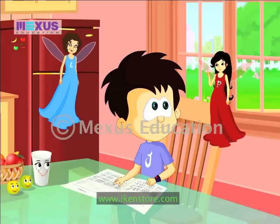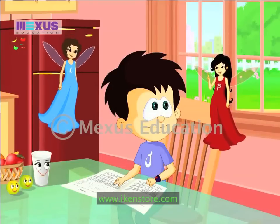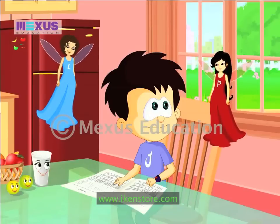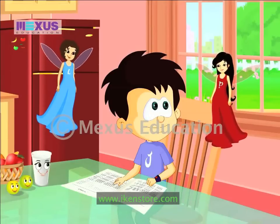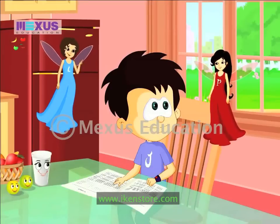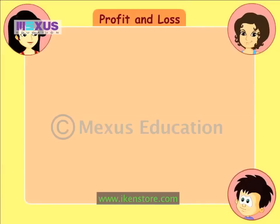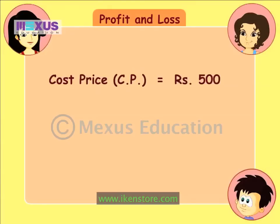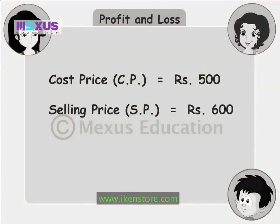Let us show you. Okay now, J.C., let's say you buy a cute little puppy for 500 rupees, and then you sell it for 600 rupees. But why will I sell such a cute little puppy? That's not the point. As you can see here, cost price, or CP, is 500 rupees, and selling price, or SP, is 600 rupees. Can you guess whether you'll make profit or loss? I'm not really sure.